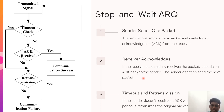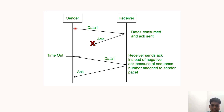If data is lost or the acknowledgement has been lost, the sender has to retransmit the data after a certain timeout, sending the original packet again. In one scenario, the data sent by the sender reaches the receiver, but the acknowledgement sent by the receiver does not reach the sender. So after the timeout, the sender retransmits the data again, and then the proper acknowledgement is received.